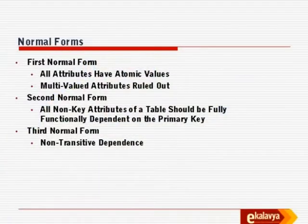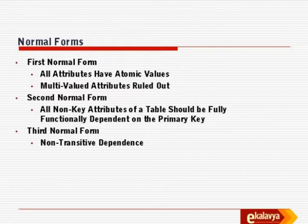There is an extended definition called third normal form, which says that not only should non-key attributes be fully functionally dependent on the primary key, but there should be non-transitive dependence as well. To recapitulate: first normal form requires atomic values and no multiple values. Second normal form involves non-key attributes dependent on the primary key in some way. Third normal form adds something more complicated which we will understand shortly.